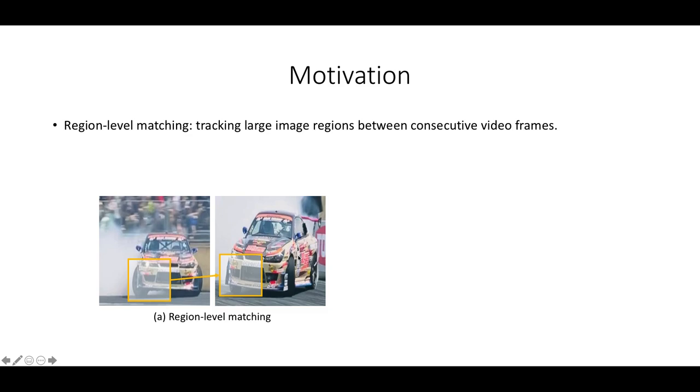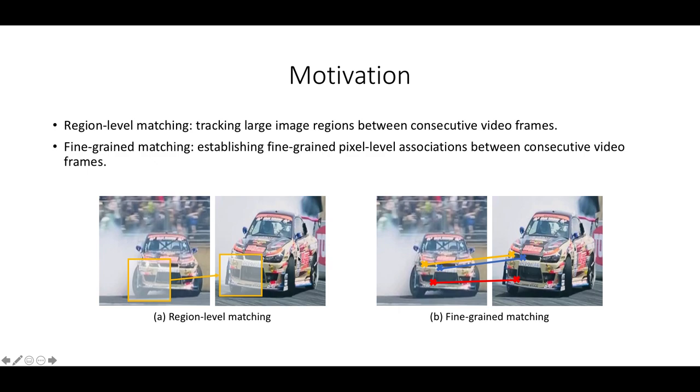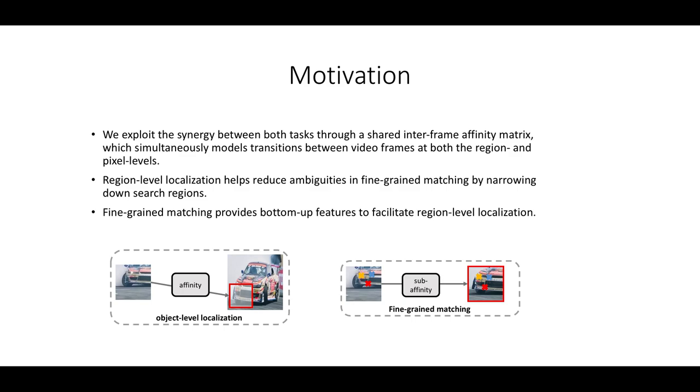Our learning process integrates two highly related tasks: object-level matching that tracks large image regions in video, and fine-grained matching which establishes pixel-level associations between consecutive video frames. Although highly related, these tasks are seldom solved together due to different optimization goals.